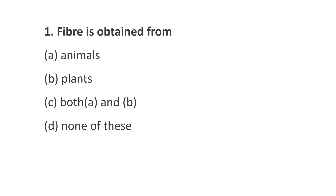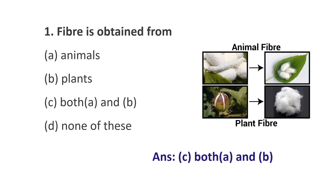Question number 1. Fiber is obtained from: Option A, Animals; Option B, Plants; Option C, Both A and B; Option D, None of these. The answer is Option C, Both A and B. That means fiber is obtained from both animals and plants.